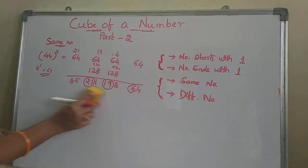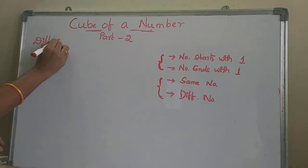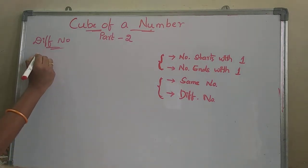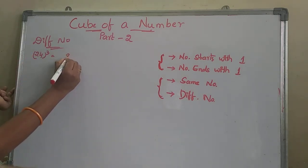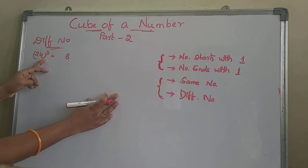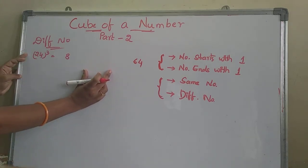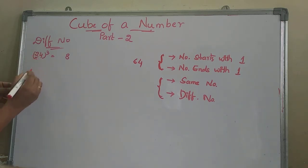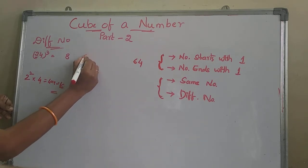Next, we move to one more topic: different numbers. Take one example — finding the cube of 24. For the left side, 2 cube is 8, write 8 here. For the right side, 4 cube is 64, write 64 here. For the second position, we square the first number and multiply by the second: 2 squared into 4 is 4 into 4, which is 16. Write 16 here.